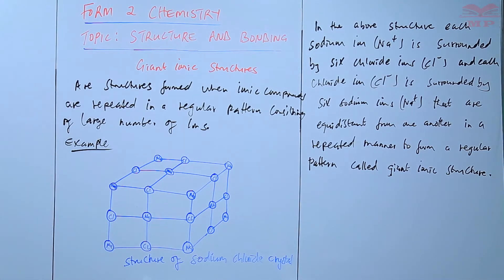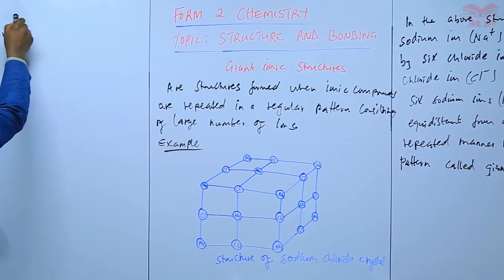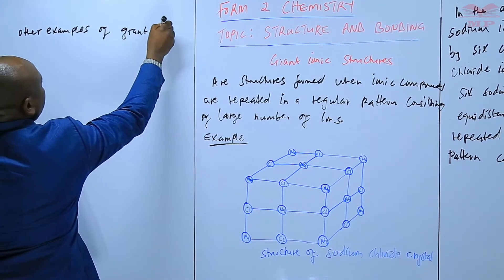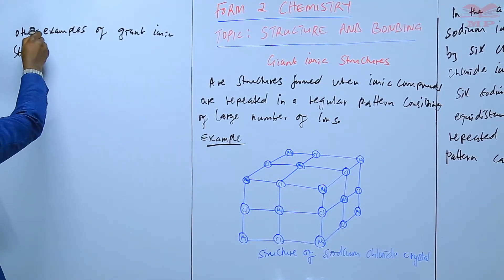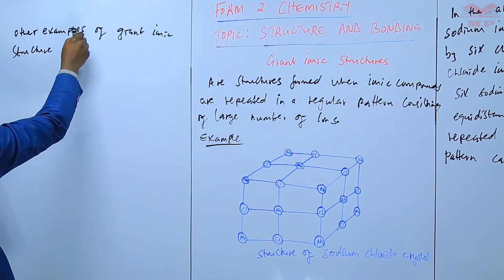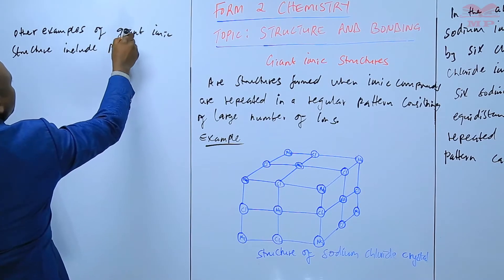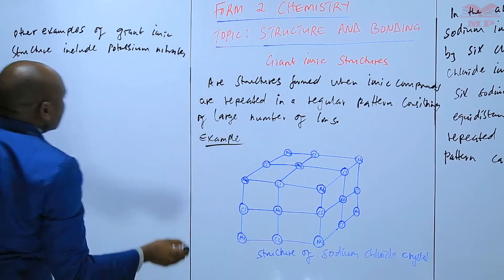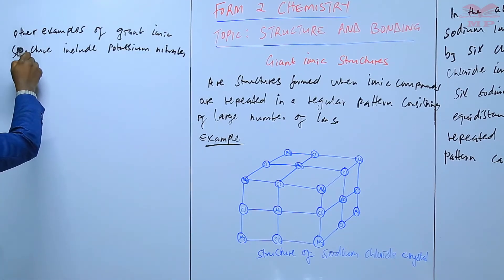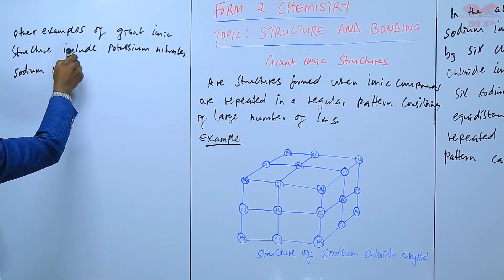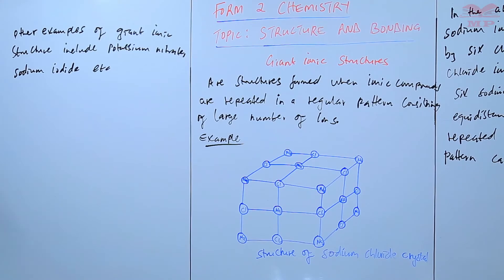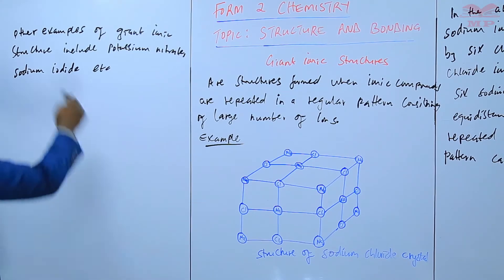We can also have other examples of giant ionic structures, including potassium nitrate, sodium iodide, etc. So all of those have giant ionic structures.